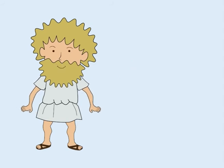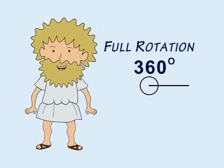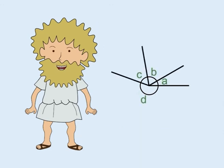Similarly, angles around a point always add up to 360 degrees, because together they make a full rotation. Here, there are four angles around a point.